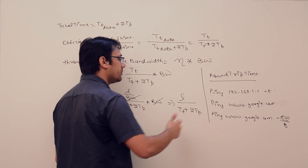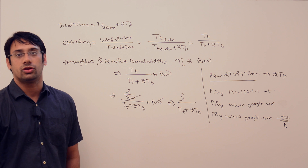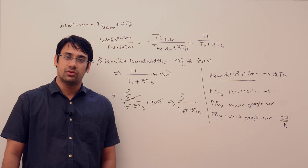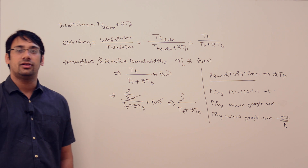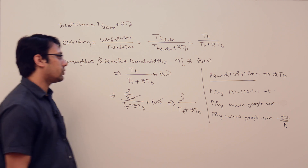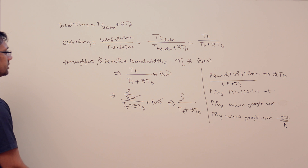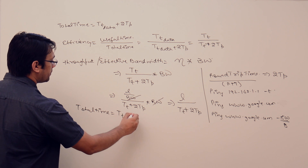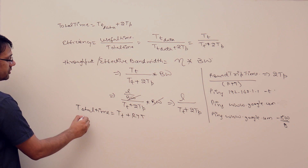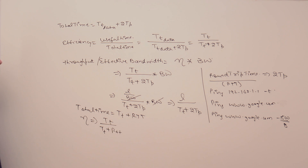Round trip time is 2 into propagation time when the transmission time of the data packet is very small. Generally we assume RTT equals 2·Tp and do not include transmission time in round trip time. Therefore, total time becomes transmission time of data plus RTT, and efficiency becomes Tt upon Tt plus RTT.